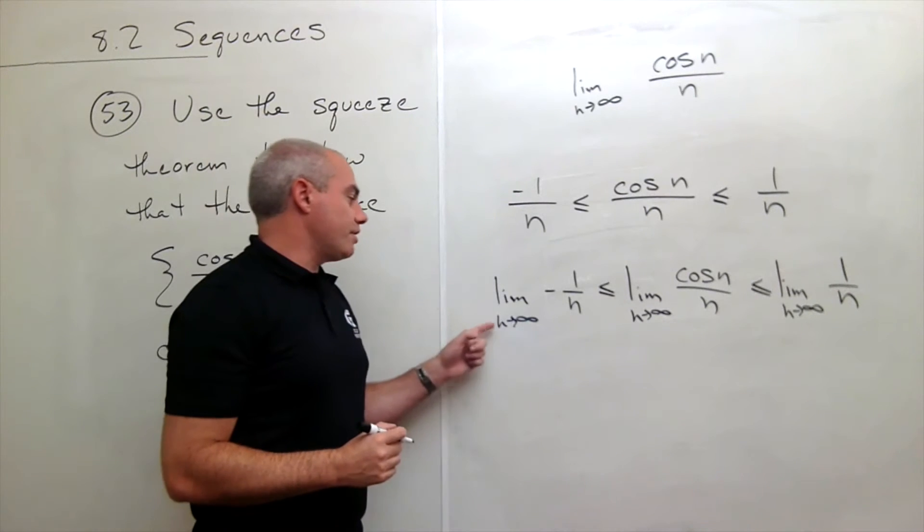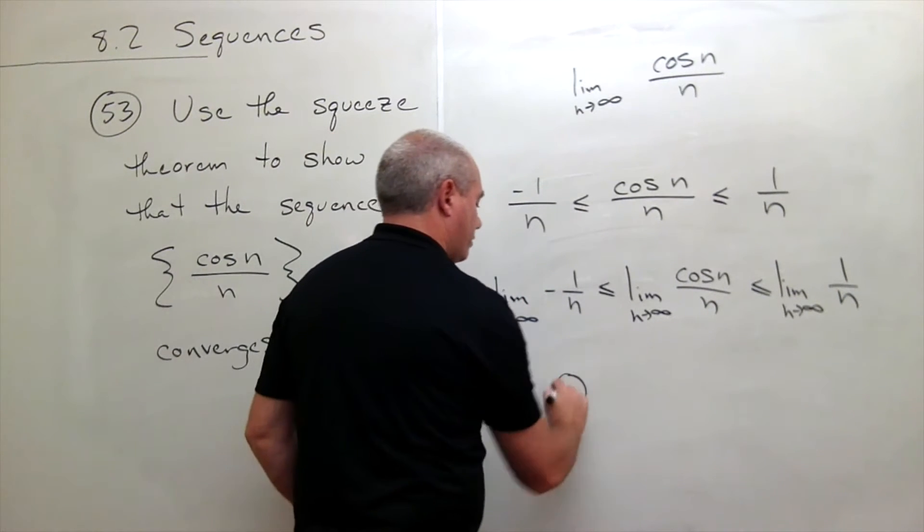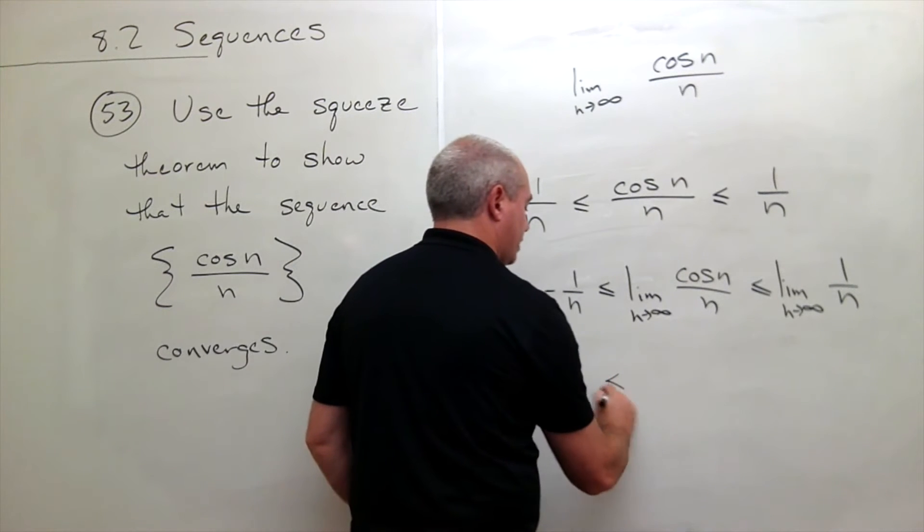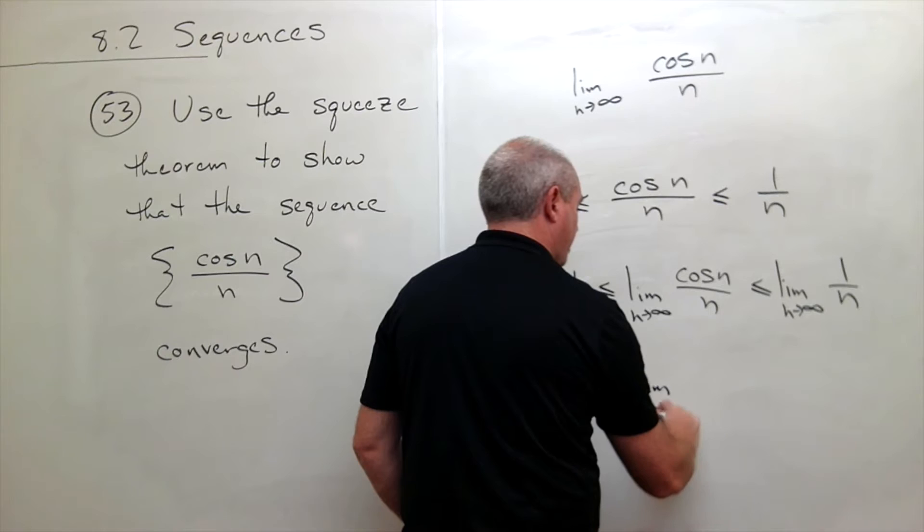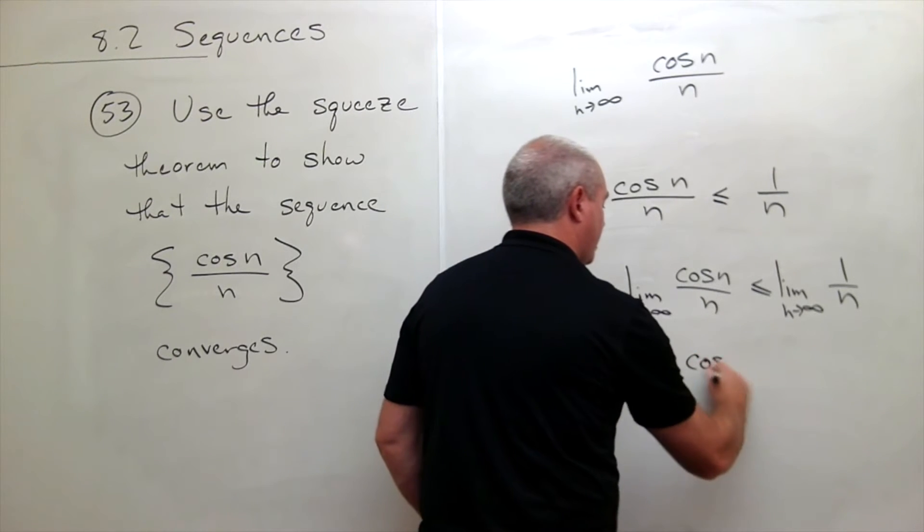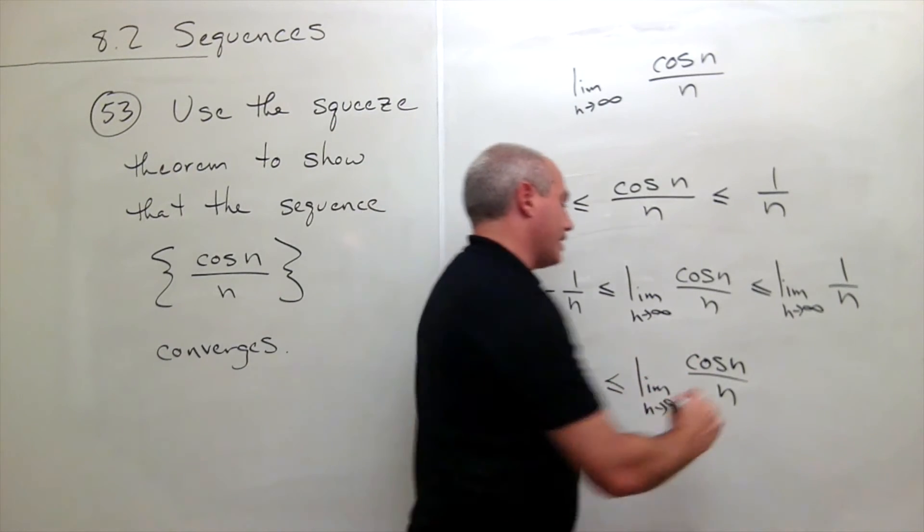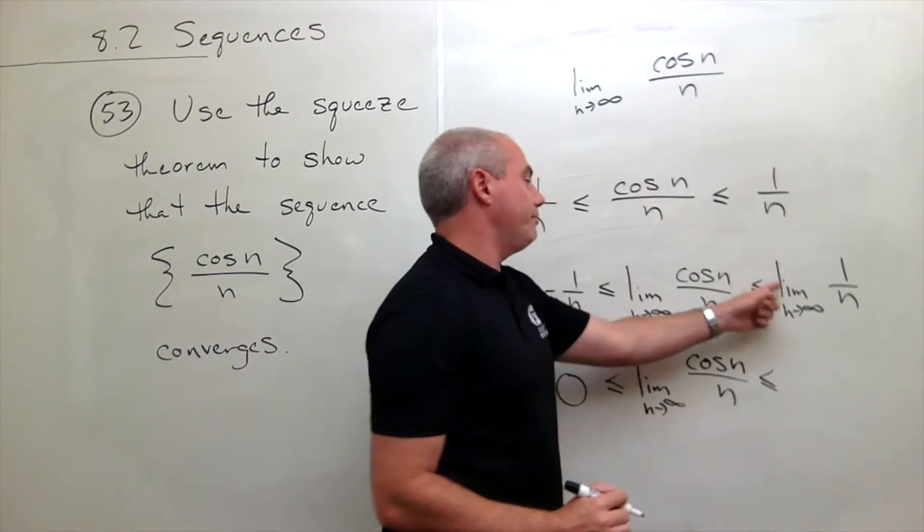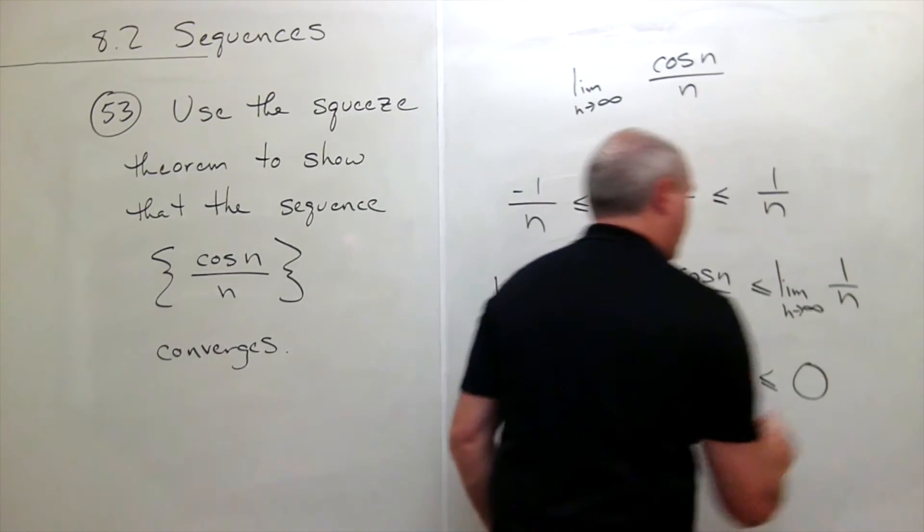The limit as n goes to infinity of negative 1 over n, that's just 0. So I get to say that 0 is less than or equal to the limit as n goes to infinity of cosine of n over n. And that's less than or equal to, well, the limit as n goes to infinity of 1 over n, that is 0.